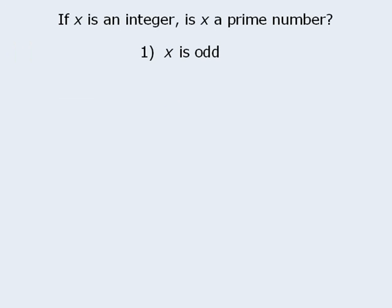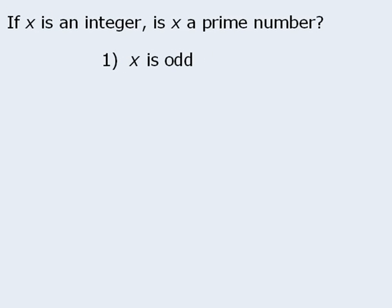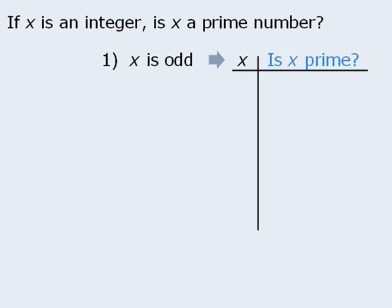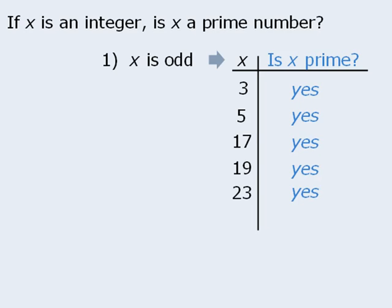Here's one last example that demonstrates the limitations of the table method. We are told that x is an integer, and we must determine whether x is prime. Statement 1 tells us that x is odd. We'll choose values of x that satisfy the condition that x must be odd and ask our target question: is x prime? If x equals 3, 5, 17, 19, or 23, the answer to our target question is yes — x is prime in each case.